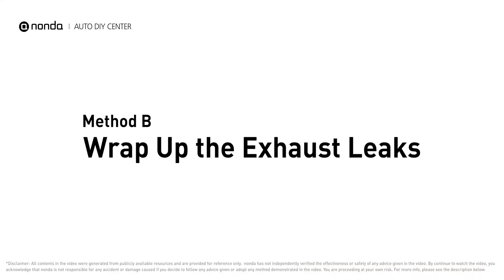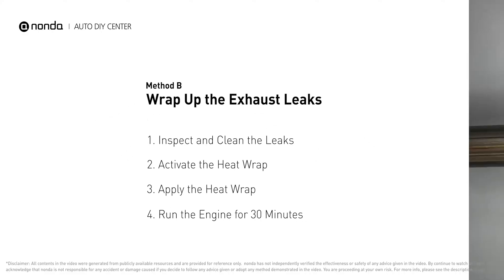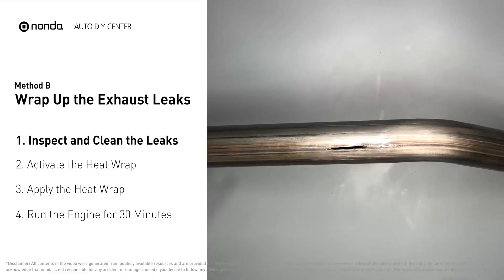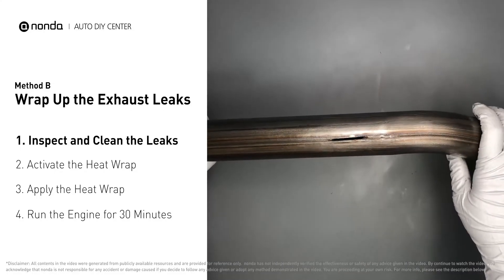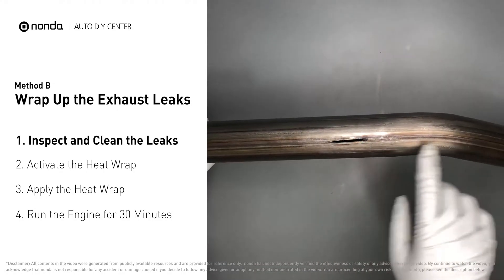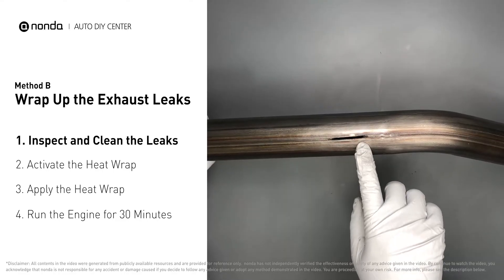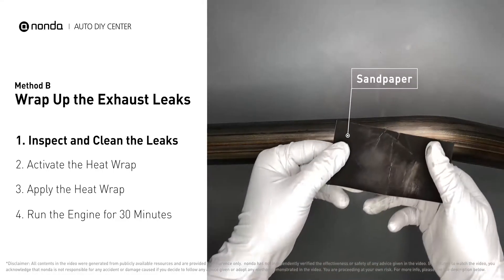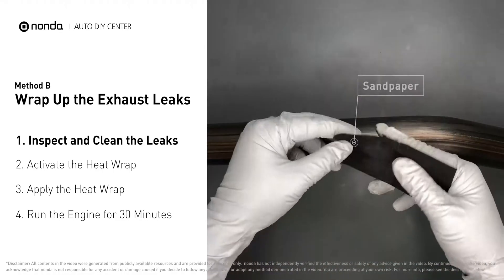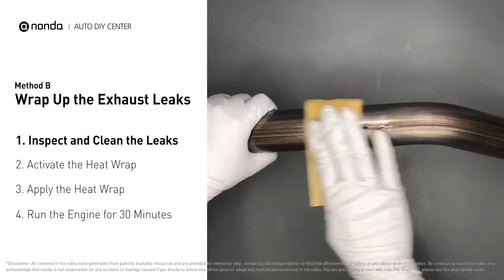Method B: wrap up the exhaust leaks. Exhaust pipes are made out of rolled steel and there is a welded seam on them like this one — the seam will often rot and leak. First, get sandpaper and a wet wipe to clean the leaking area for better application.